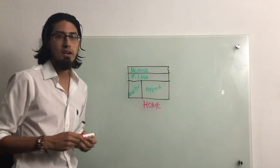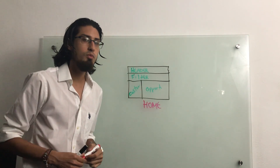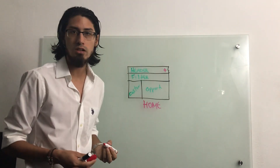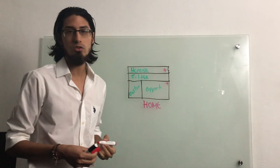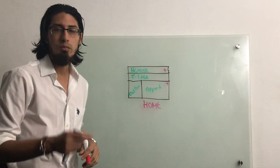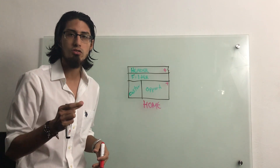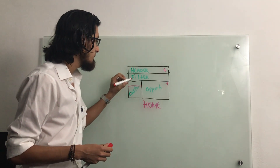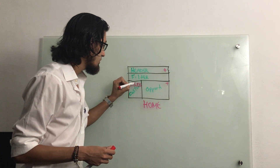Now let's identify the different actions we can execute from this home screen. One of them, for example, would be the action to add additional customers — from the header section we have this button. We also have a button to add opportunities. In the customer section, we are going to show the list of all the customers, and from each customer we will have three possible options: view, delete, or edit.